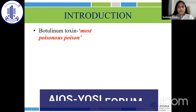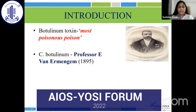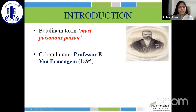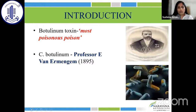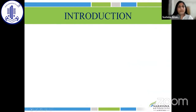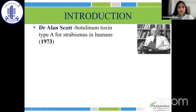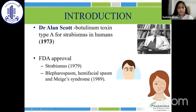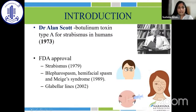Botulinum toxin, which was once treated as the most poisonous poison, was first isolated by Professor Van Ermenjem in 1895. Much later, Dr. Kornad Behrens first conceptualized the idea of paralyzing extraocular muscles by pharmacological agents. Dr. Alan Scott proposed using botulinum toxin type A for strabismus in humans, and the FDA approved it for strabismus in 1979, for spastic conditions like blepharospasm, hemifacial spasm, and Meek syndrome in 1989, and for aesthetic indications like glabellar lines in 2002.